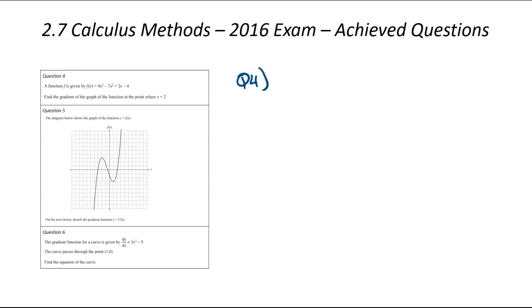So question number four, a function f is given by 4x cubed minus 7x squared plus 2x minus 4. We've been asked to find the gradient where x is equal to positive 2. It's a really common achieved question about finding the gradient.